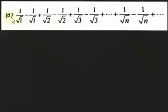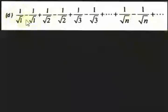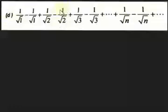In this video we are going to discuss alternating series. Notice that the first term is a positive quantity, the second one is negative, then another positive quantity, and the fourth one is negative — it alternates. So this is called an alternating series.